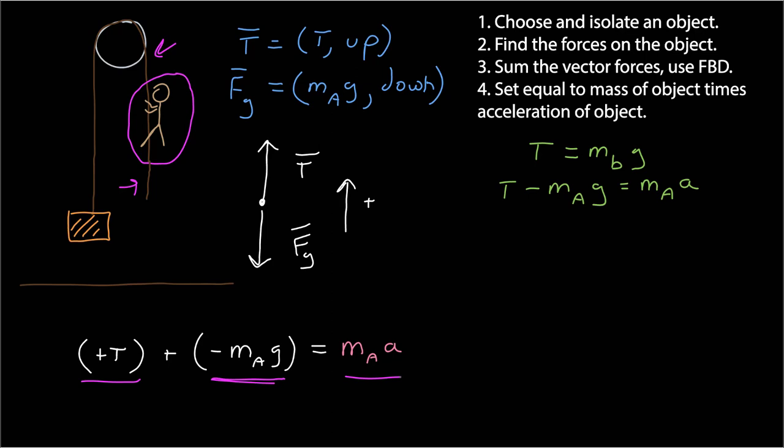This is the information I have so far: that the tension in the rope is equal to the mass of the box times G, and that the tension minus mass of Alice times G is equal to mass of Alice times the acceleration. Do I know everything? Well, I have two equations and two unknowns, tension and the acceleration, so I can in fact solve for the acceleration. I don't need to know any more information.